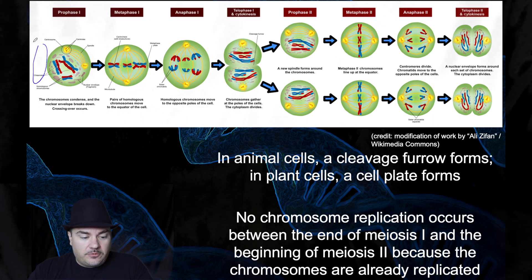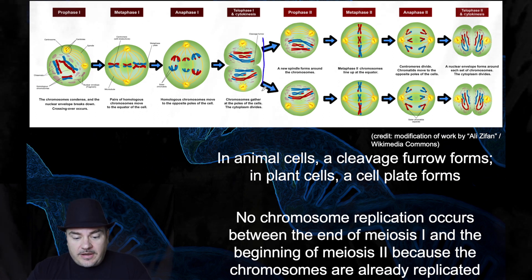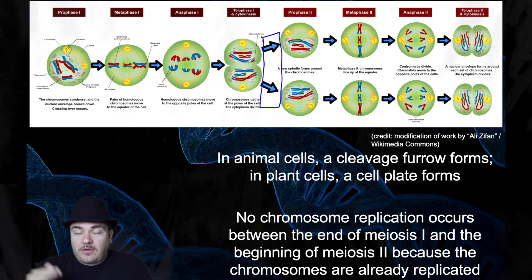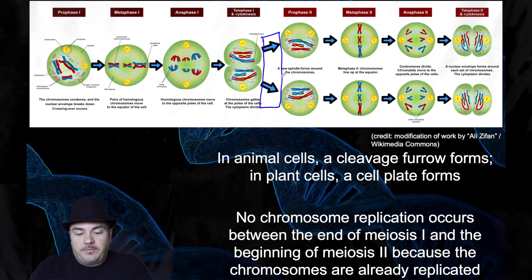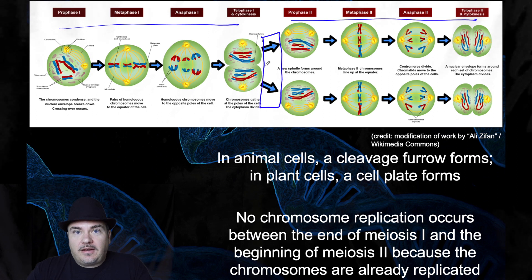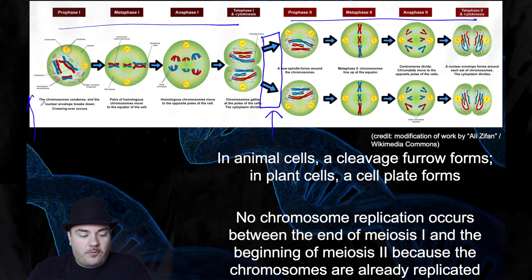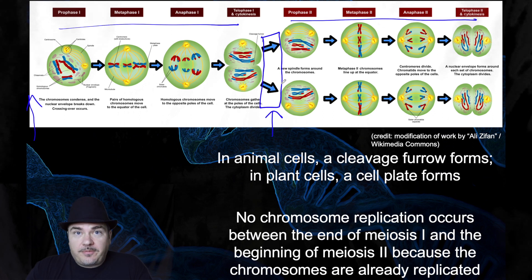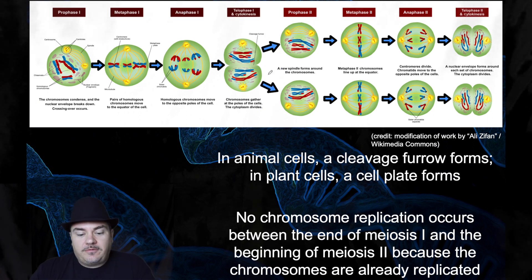Before meiosis one started, you had interphase including S phase to duplicate the DNA. Now between meiosis one and meiosis two, after cytokinesis, there is a brief interphase called interkinesis. Importantly, this interphase does not have an S phase, meaning the chromosomes do not duplicate between meiosis one and meiosis two. The chromosomes only duplicate before meiosis one starts.